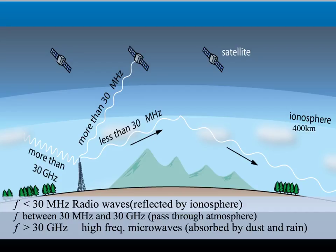Some higher frequency electromagnetic waves, such as microwaves, are able to pass through the ionosphere unaffected. It is not just low frequencies that meet obstacles. High frequency microwaves above 30 gigahertz, or 30,000 megahertz, also have difficulty passing through the atmosphere. They are scattered and absorbed by dust and rain, which reduces the signal strength and results in poor quality communication over long distances.